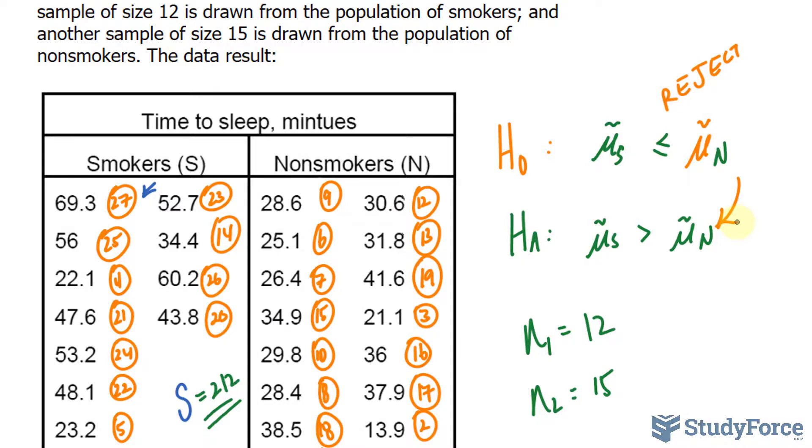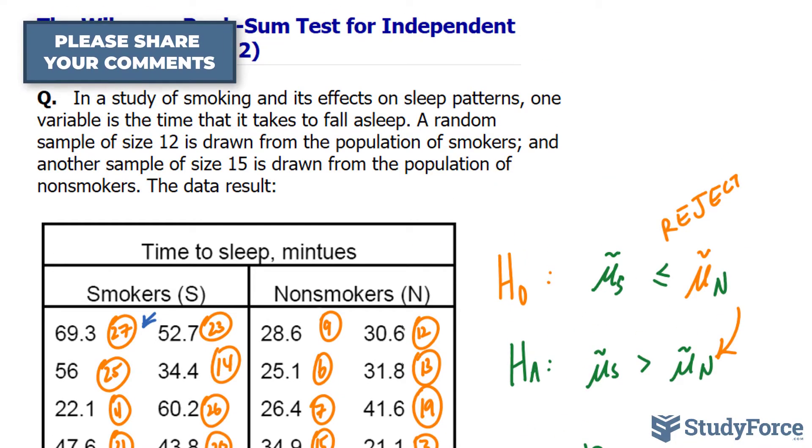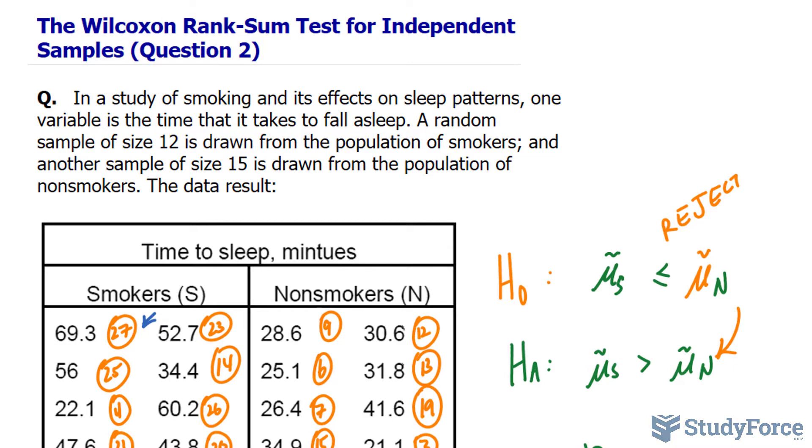And just to say that in another way, there is sufficient evidence at 0.05 significance level to say that it takes longer for smokers to fall asleep than non-smokers. And there you have it. Another example on the Wilcoxon rank sum test for independent samples.